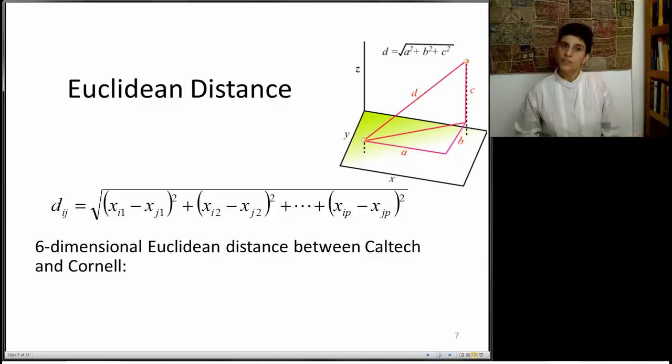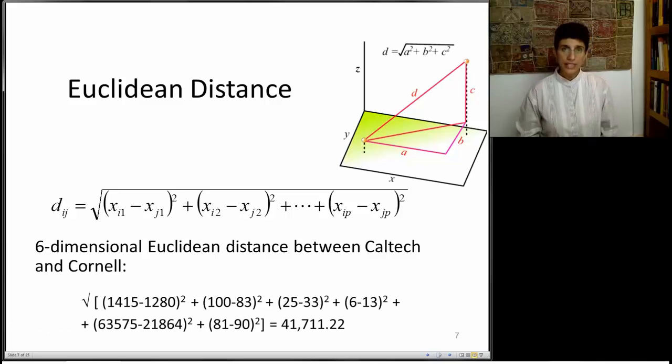If we look back at Caltech and Cornell and the numbers that we just had, to measure their Euclidean distance, this is what I would do. So 1415 is the Caltech number, and I'm subtracting the Cornell number and squaring it. These are the SAT numbers coming in next. And we have expenses down here, et cetera. And after taking a square root of everything, I get 41,711.22. Look at this number and look at this computation and see if you can identify an issue. Remember that the goal is to measure the distance between Cornell and Caltech in terms of their rating.